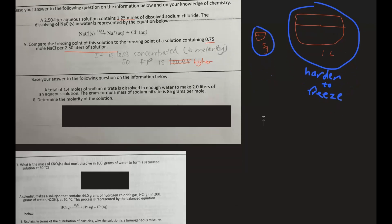A total of 1.4 moles of sodium nitrate is dissolved in enough water to make 2 liters of aqueous solution. So 1.4 moles of sodium nitrate is dissolved in enough water. The gram formula mass of sodium nitrate is 85 grams per mole. And it wants us to determine the molarity of the solution. So the molarity equation on the reference table is molarity equals moles of solute over liters of solution. So how many moles of sodium do we have? Well, we have 1.4 moles right here because it's dissolved in enough water to make 2 liters of the aqueous solution. So our total liters of solution is 2 liters.